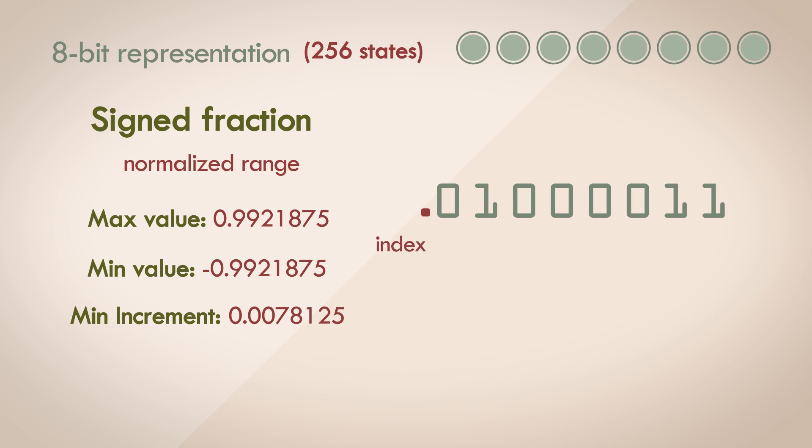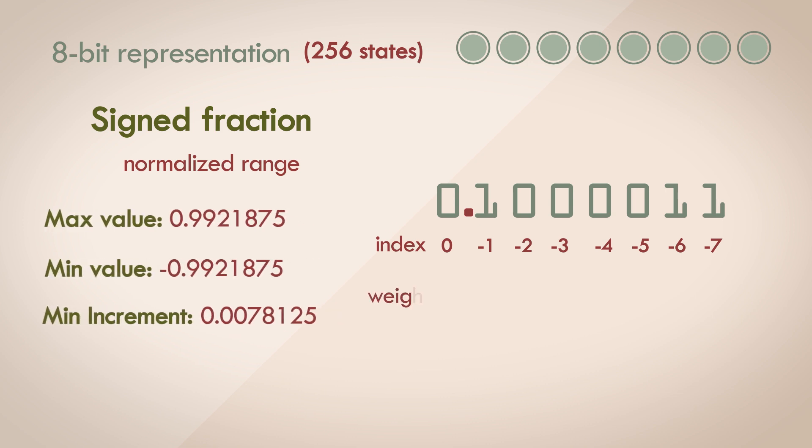The index of each digit depends on its position with respect to the radix. So, going towards the right side from the radix, the index is going from negative 1, all the way to negative 7. The weight of the digit is still 2 to the power of the index, so when we calculate the weights of the digits, we get the following values.